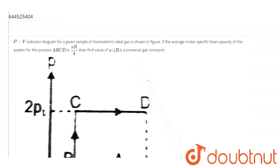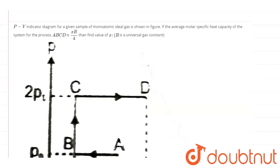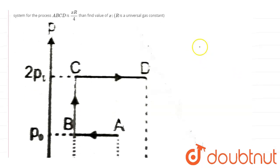A PV indicator diagram for a given sample of monatomic ideal gas is shown in the figure. The average molar specific heat capacity of the system for the process ABCD is xR/4. Find the value of x.